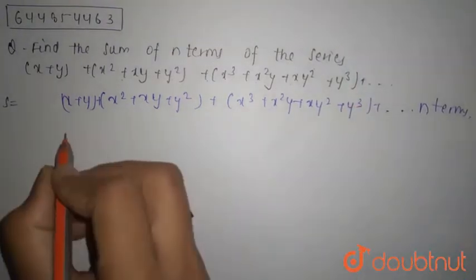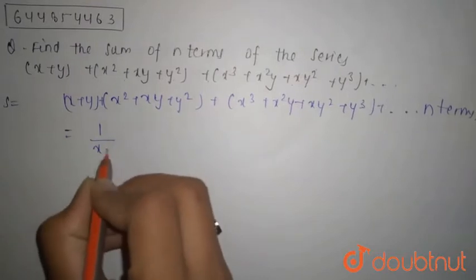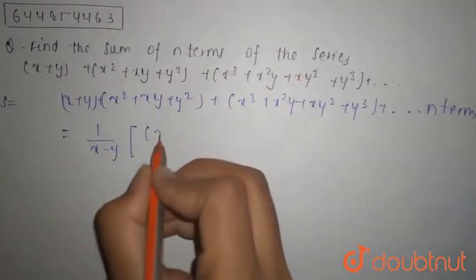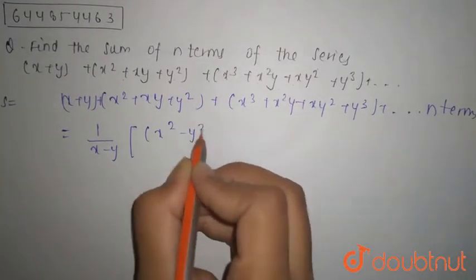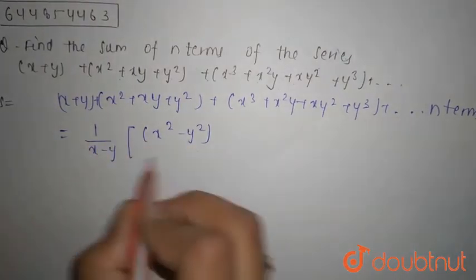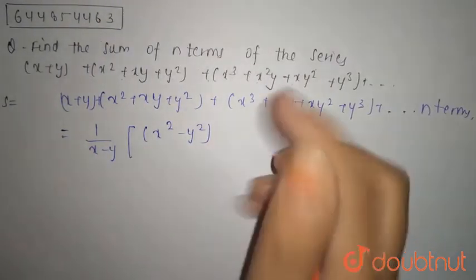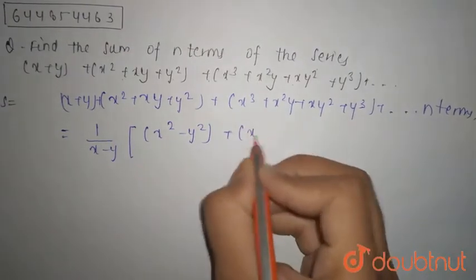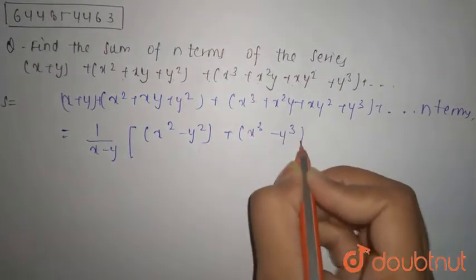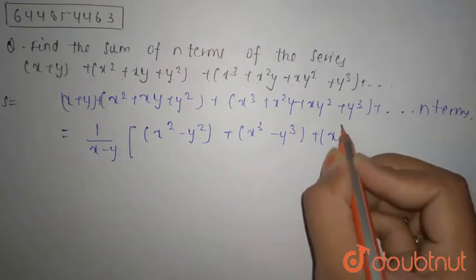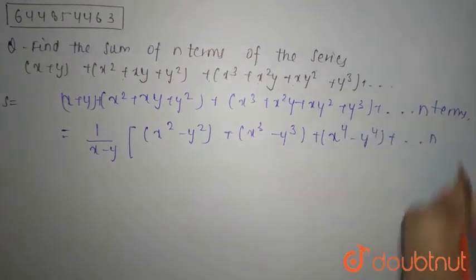This can be written as 1/(x-y) times [(x²-y²) + (x³-y³) + (x⁴-y⁴) + ... up to n terms] using the identity a²-b².